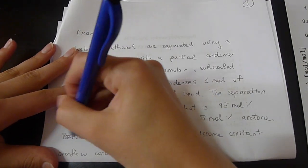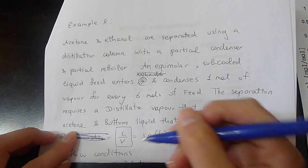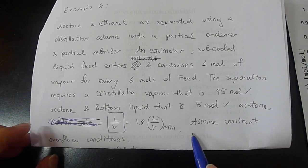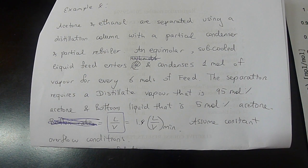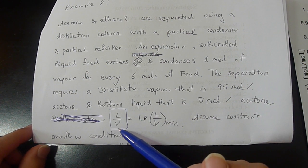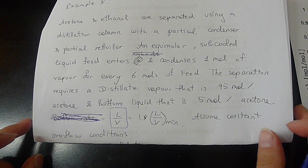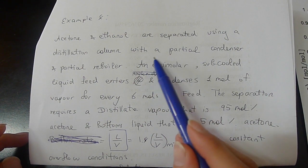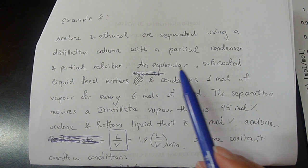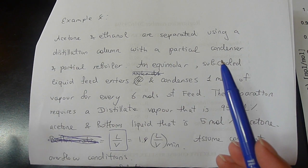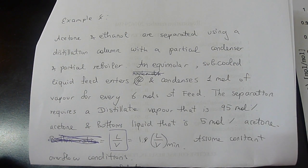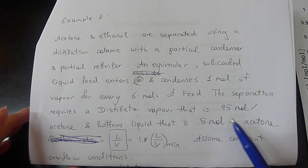Note that L over V — liquid over vapor — is equal to 1.4 times L over V minimum, and we assume constant overflow conditions. Reflux ratio is not equal to L over V; reflux ratio is equal to L over D. The feed is equimolar, meaning similar moles of each component, so it's 50-50% acetone and ethanol, giving XF = 0.5. Acetone is the more volatile component, so we use mol fractions for acetone.